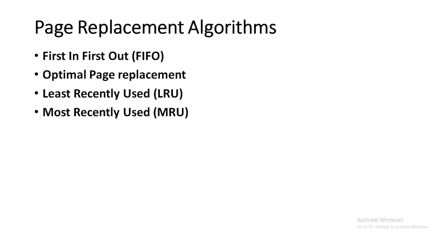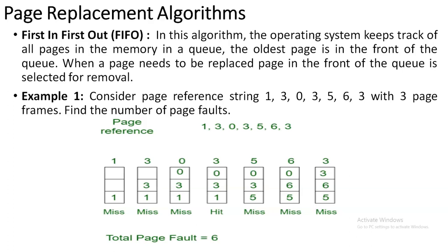The first one is First In First Out. The concept of this page replacement algorithm is: consider you are having five pages you can hold. When all five spaces are full and a new page comes with no space, the page that will be removed is the one which was inserted first — that is First In First Out. Whichever page has been inserted first, that page will be removed to make room for the new page.